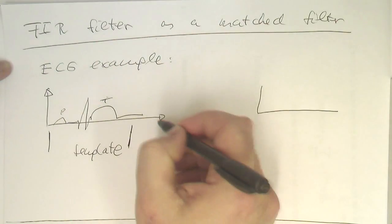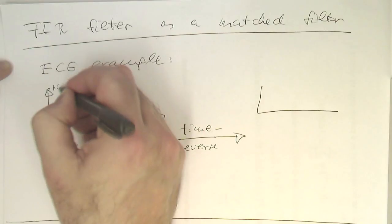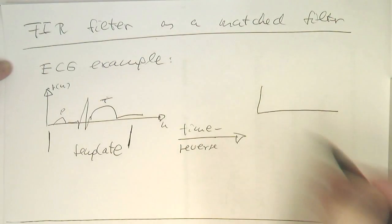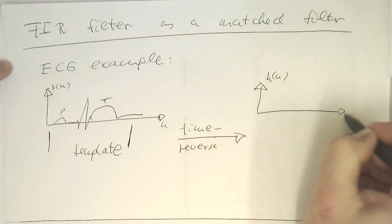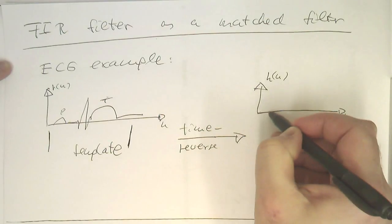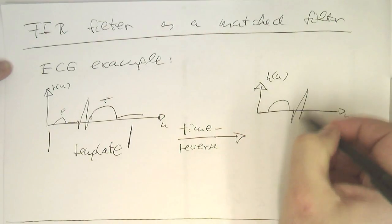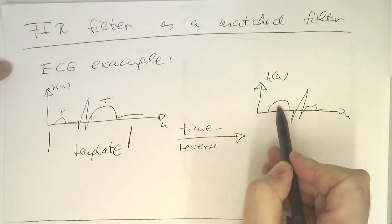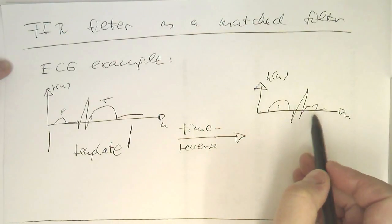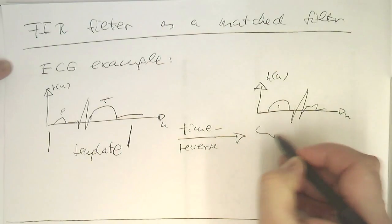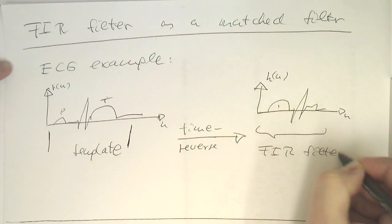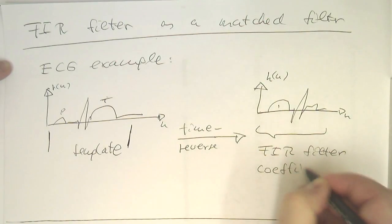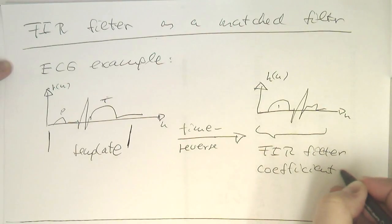So, if this is our template here, let's call this here, R of N, and then we just need to time reverse this here to get our impulse response of our FIR filter. So, this will look roughly like that. So, now we've got the large hump first and the small one here at the back. And this is essentially, these are essentially our FIR filter coefficients. So, simple as that.